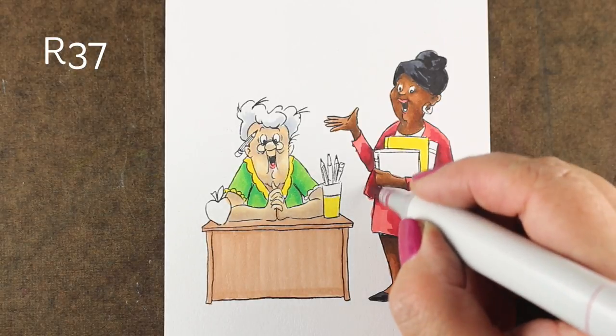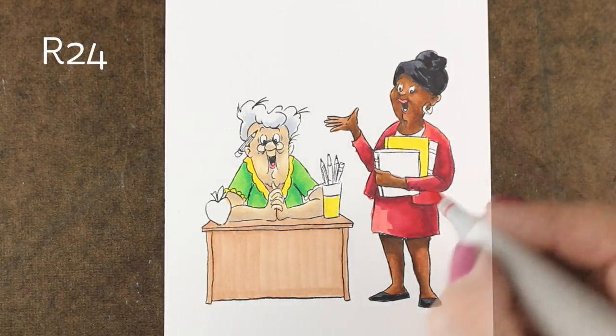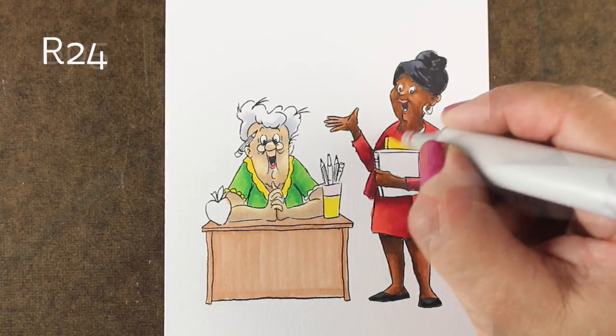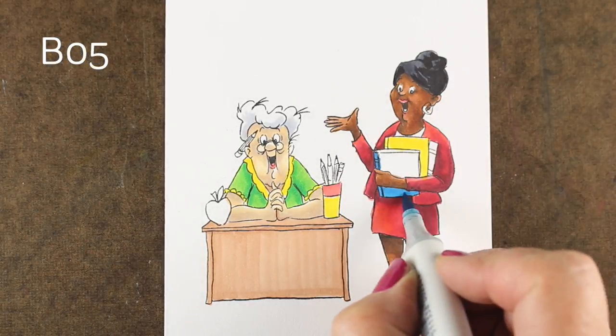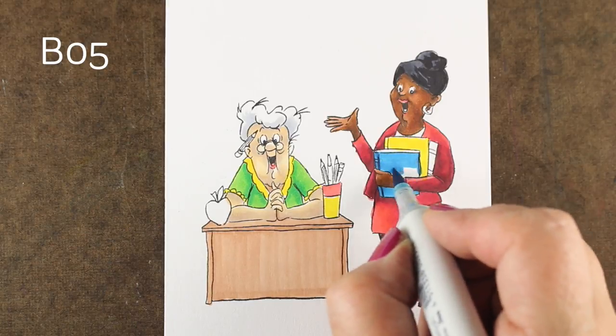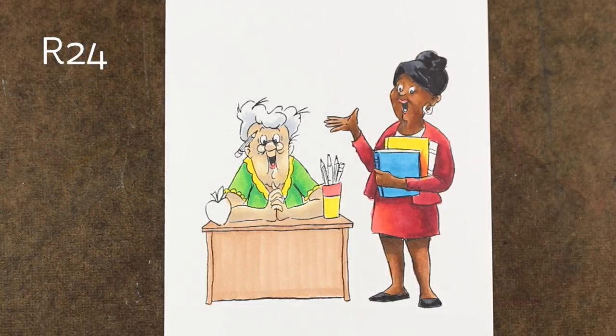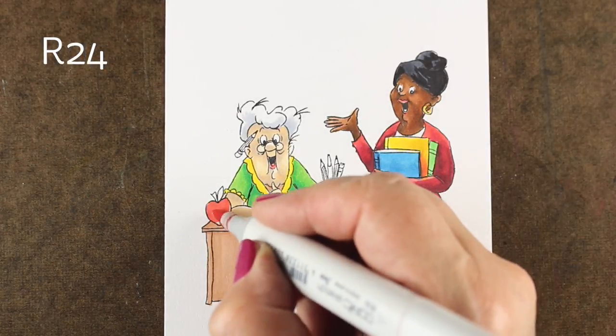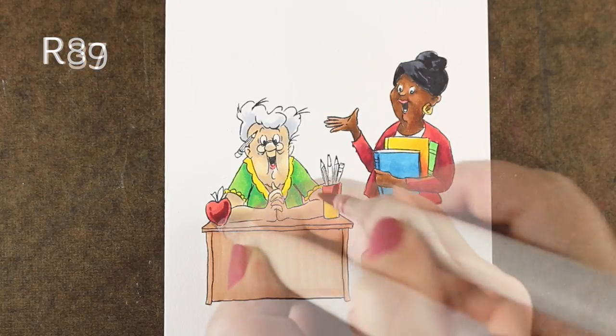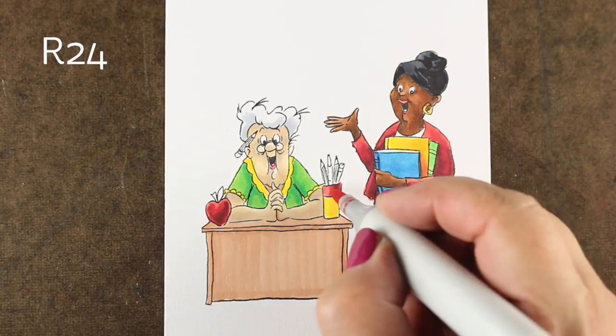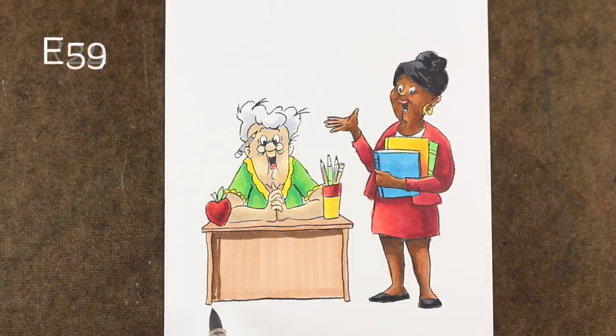And the lady at the desk has that nice bright green, which is also going to pull her forward. And then the colors in the background, I'm going to want to be a little more on the muted side. So in addition, the books that she's holding are also going to be on the bright side. Just get that nice bright red apple. All those kind of things are going to pop forward.